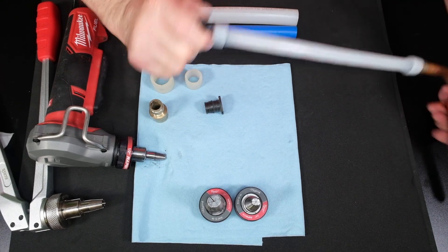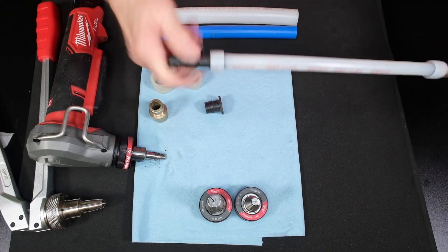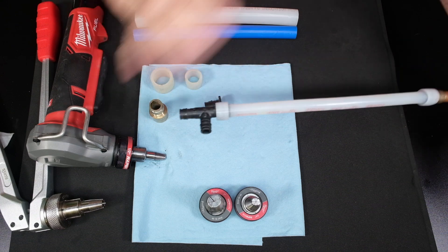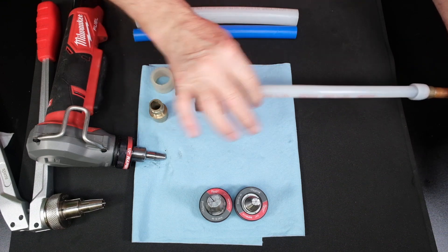Again, these fittings are kind of like the PEX-B. You can rotate this fitting in the pipe, and it doesn't hurt it. It won't leak. This is very flexible pipe.